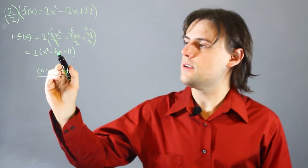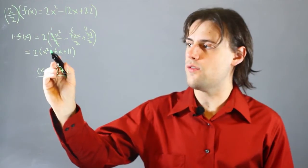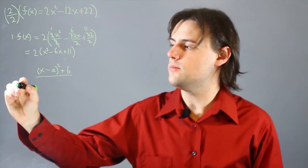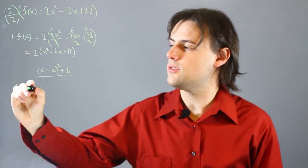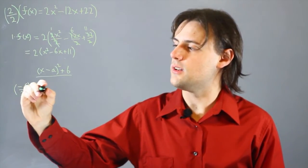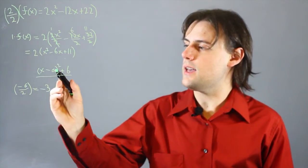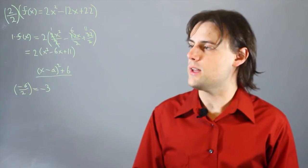So, to get a, what we do is we take the coefficient of the linear term, and we divide it by 2. So we have negative 6 divided by 2, which gives us negative 3. So, we see that a is going to be equal to 3 in this case.